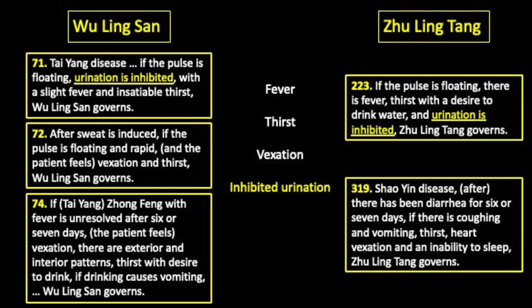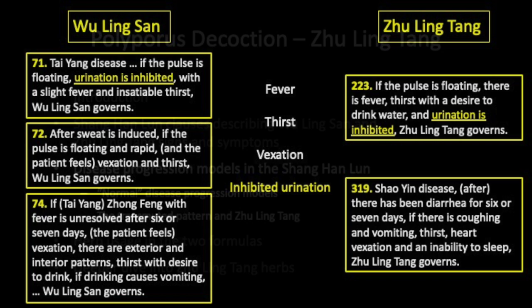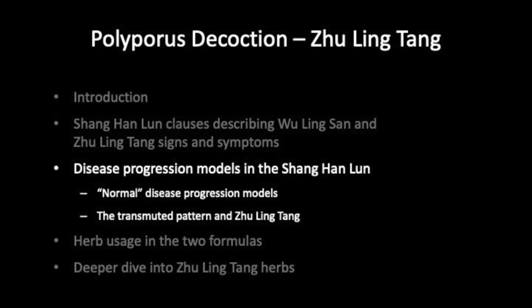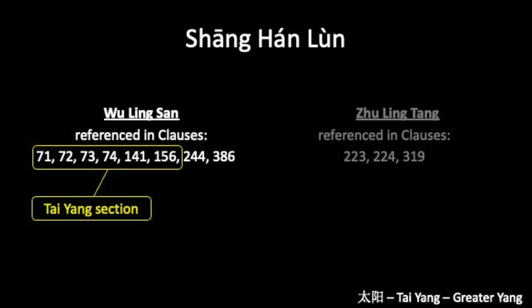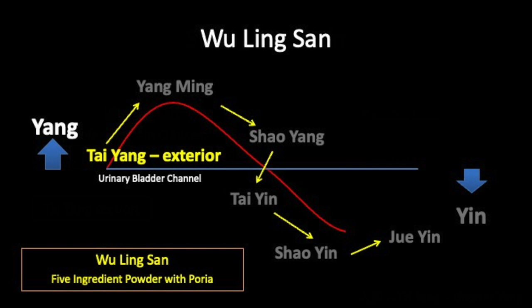The fact that both formulas indicate somewhat similar heat-related signs and symptoms requires a little more investigation. To make sense of this, we need to look at the clauses at a more general level to see how the Shang Han Lun views disease progression. The main clauses referring to Wu Ling San are found in the earlier Tai Yang, or Greater Yang, section, which corresponds to an earlier stage of disease affecting the Yang urinary bladder channel.